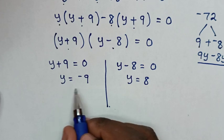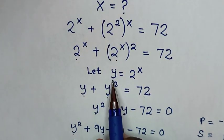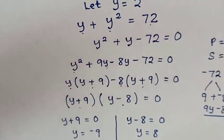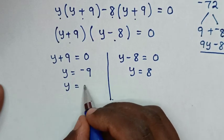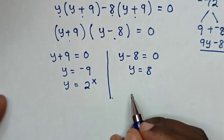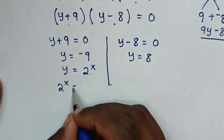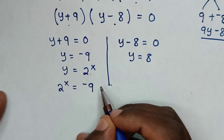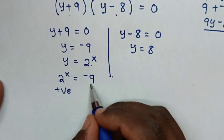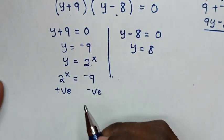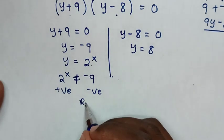From y equals negative 9: before, we set y equal to 2 power x, so substituting gives 2 power x is equal to negative 9. But 2 to the power of any number is always positive, and this is negative, so positive cannot equal negative. Therefore this solution is rejected.